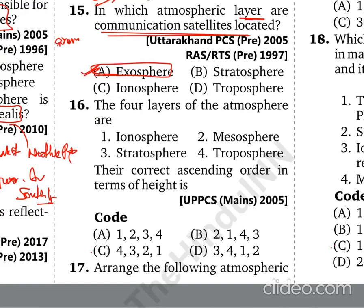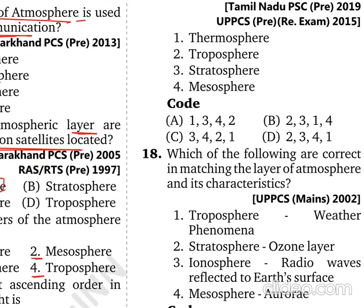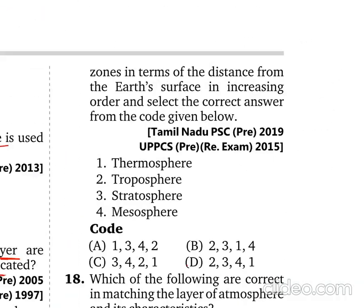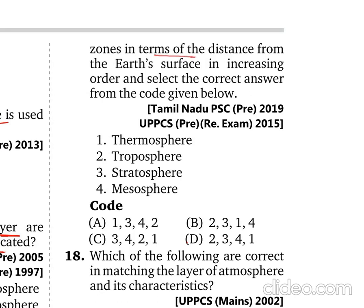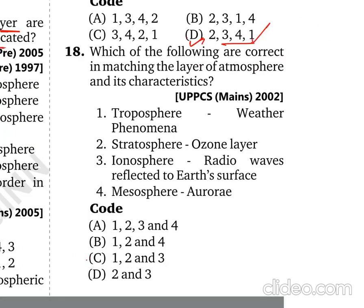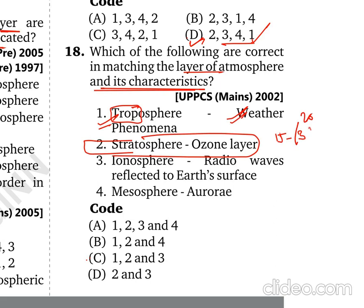The full sequence of atmospheric layers is: Troposphere, Stratosphere, Mesosphere, Thermosphere (Ionosphere), and Exosphere. In terms of distance from Earth's surface, the order remains Troposphere first, then Stratosphere, Mesosphere, Thermosphere, and Exosphere. Matching layers with characteristics: the Troposphere is where changes occur, and the Stratosphere at 15–25 km contains the ozone layer that protects us from ultraviolet radiation.